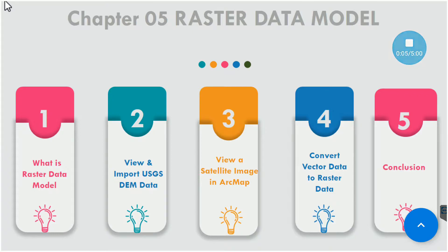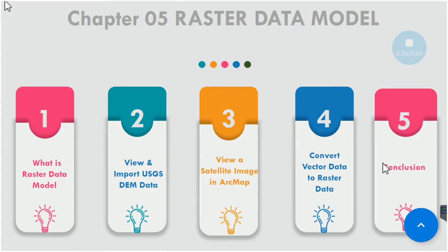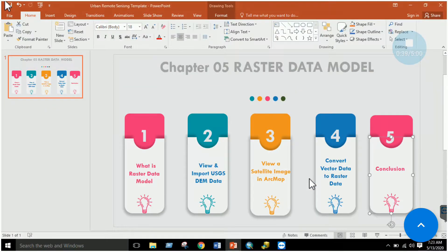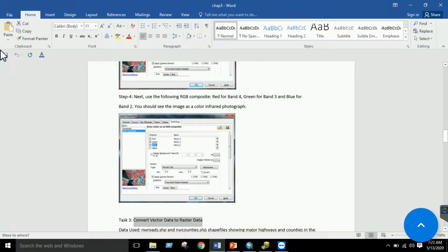Bismillahirrahmanirrahim. This is our fifth lab, related to Chapter 5: Raster Data Model. We will follow a timeline: what is raster data model, then view a raster DEM from USGS, view a satellite image in ArcMap, convert vector data to raster data (rasterization), learn concepts related to vectorization, and finally conclude the lab.